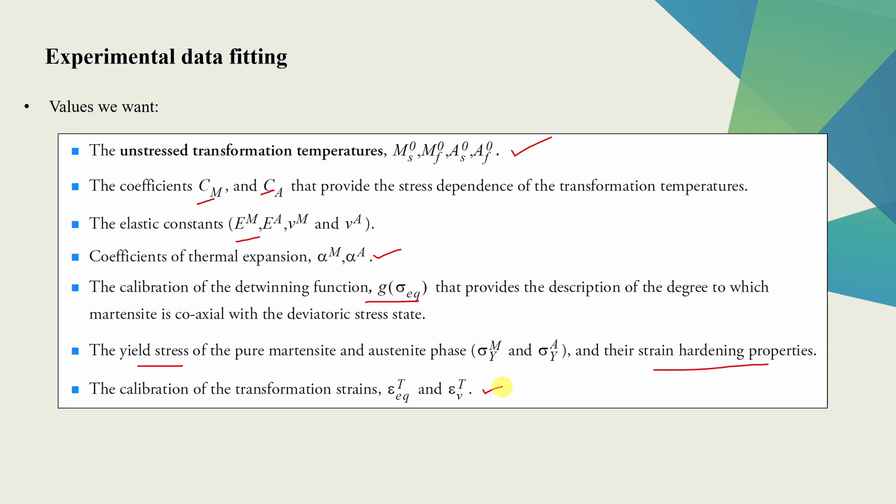Now the good news is in MARC, we have already given all these parameters for nitinol in one of the examples in user guide. So if your material is same, you can go ahead and use those parameters. You don't have to worry about anything. But let's say your material is something different. Then of course, you have to perform some experiments and extract these parameters out of those experimental results. Let's just quickly see how we can do that. And then we will solve one example.